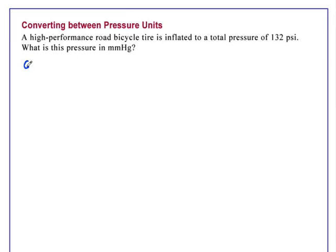We're given a pressure in very commonly used English units: 132 psi. And we're asked to find the equivalent pressure in millimeters of mercury, which is also known as torr.